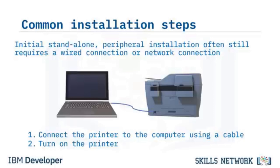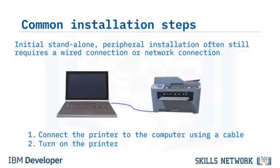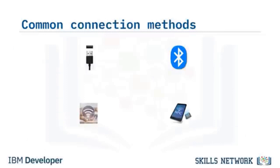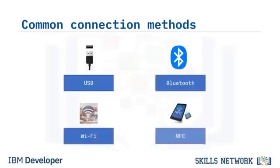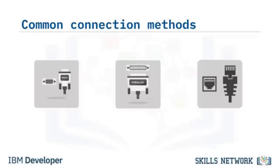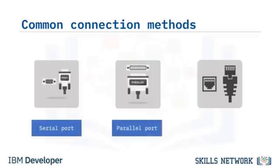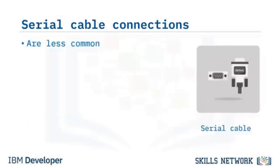Initial stand-alone peripheral installation often still requires a wired or network connection. You'll connect the printer to your computer using a cable, then turn on the printer. Frequently used stand-alone peripheral and printer connections include USB cable connections and wireless connections including Wi-Fi, Bluetooth, and near-field communications or NFC. You might also encounter serial port connections, parallel port connections, or a network connection. Serial connected printers are less common these days, as serial connections transmit data more slowly.